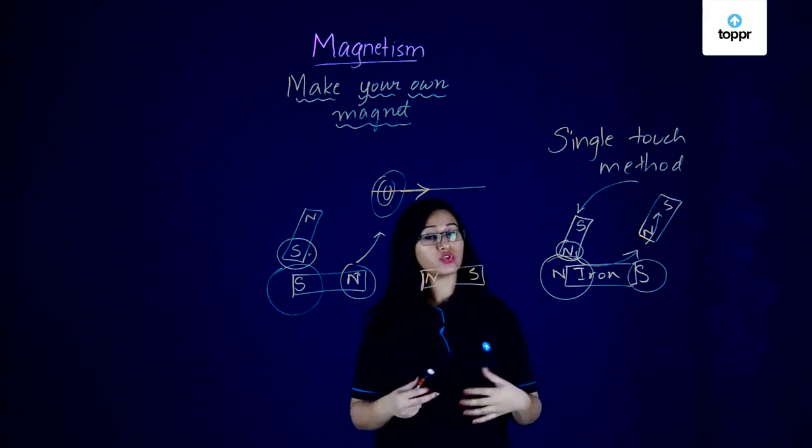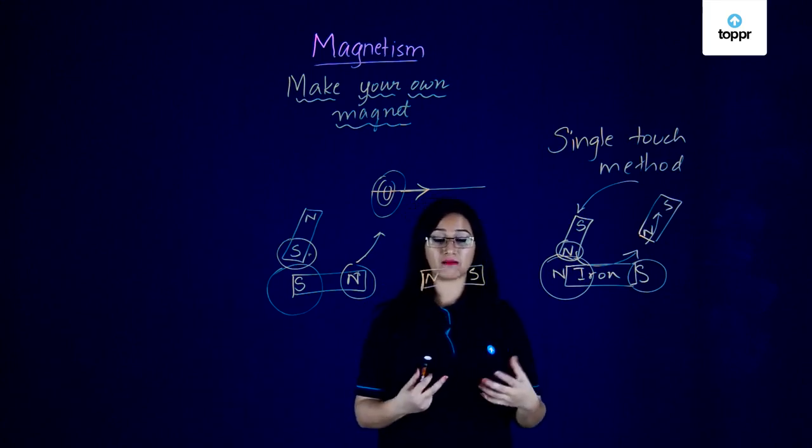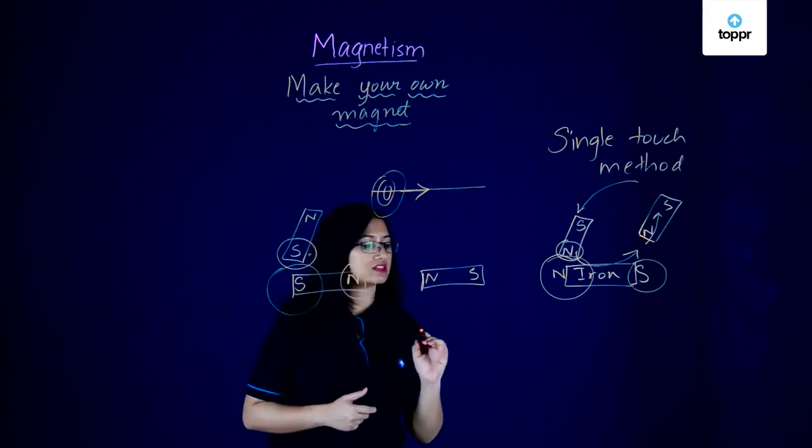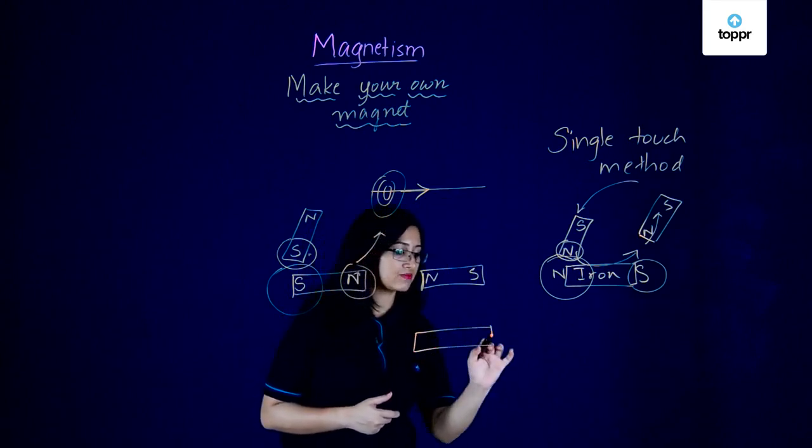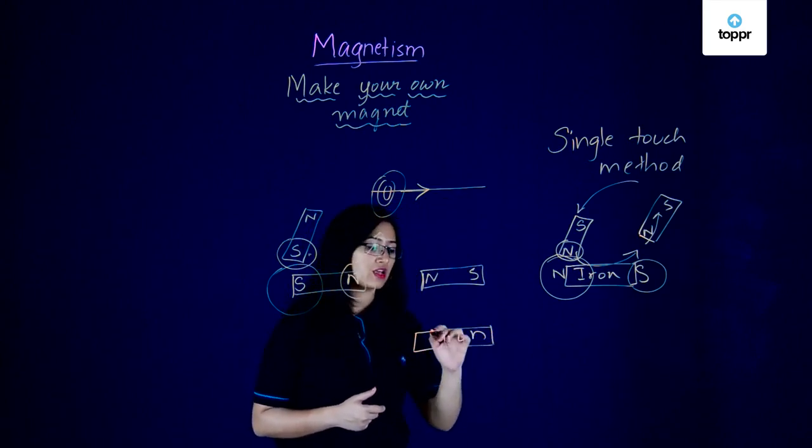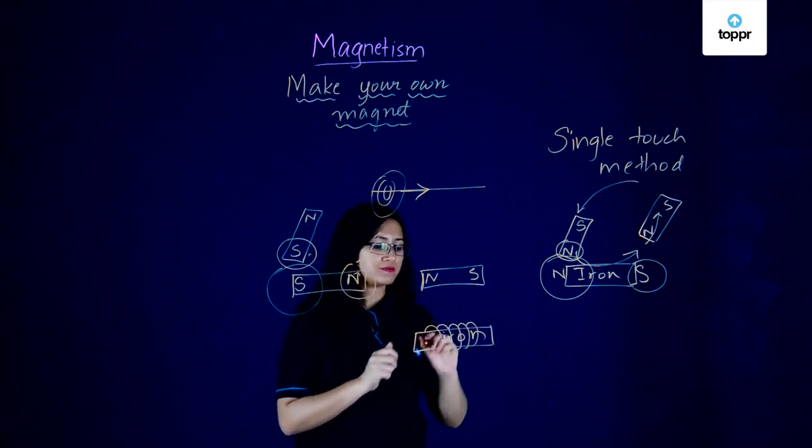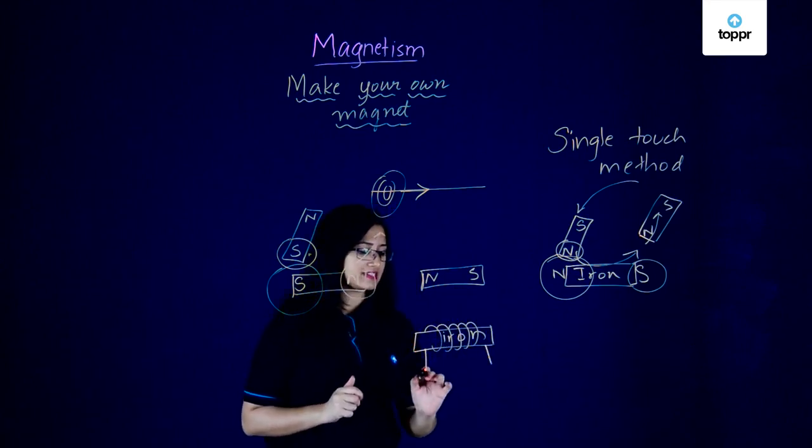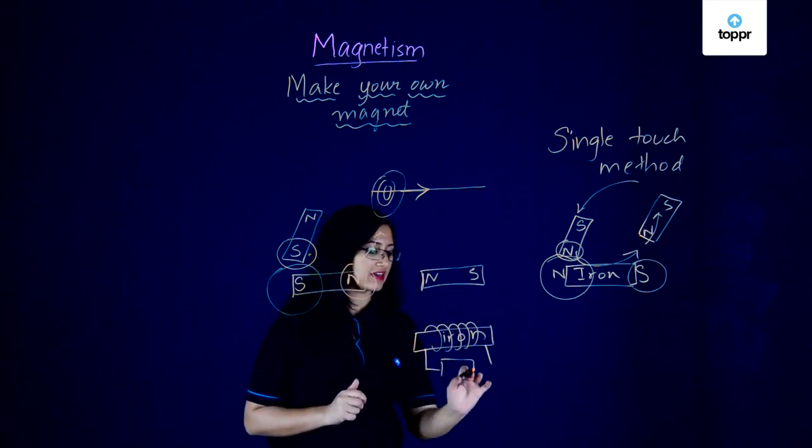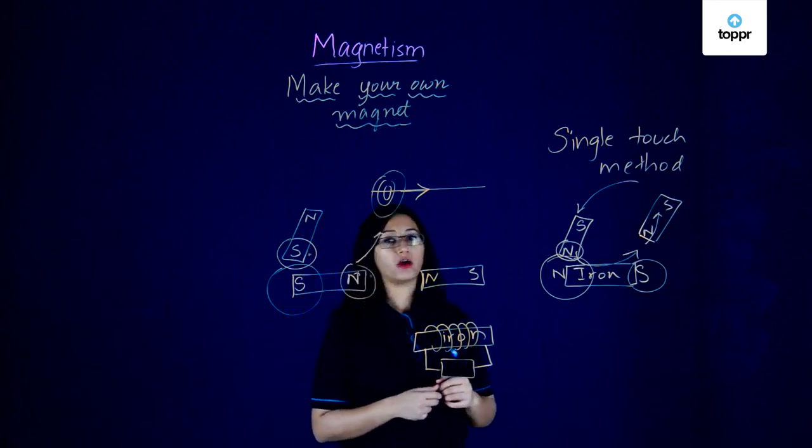All you have to do using electricity to create a magnet is to take the substance that you want to magnetize. Let's say we have again an iron bar. You have to wrap a coil of wire around it quite a few times, and take the ends of the wire and connect it up to a battery or a power source.